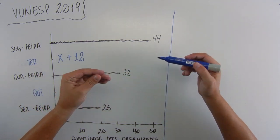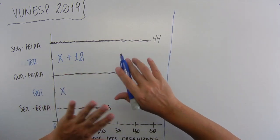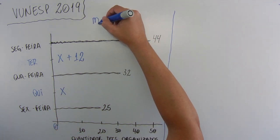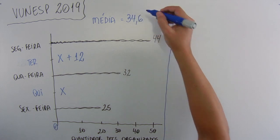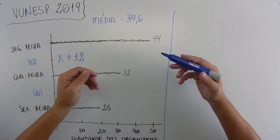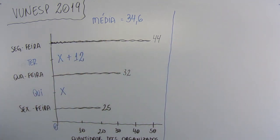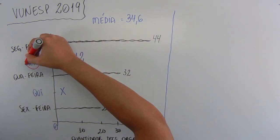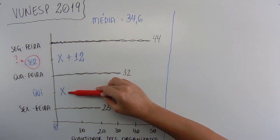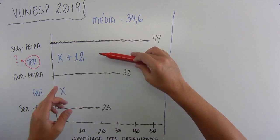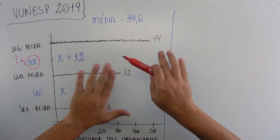Continuing. And that the arithmetic mean of the quantity of documents organized from Monday to Friday was 34.6. So, I'll put up here the mean of all days of the week was 34.6. Then, let's continue to see what the problem's question is. The quantity of documents organized on Tuesday was. So, the problem's question is the quantity of documents organized on Tuesday, right? Then, we're going to find the value of X. In the end, we have to add 12 to find the answer.